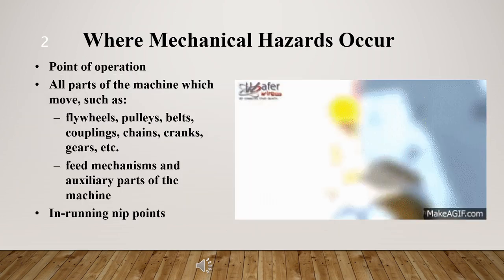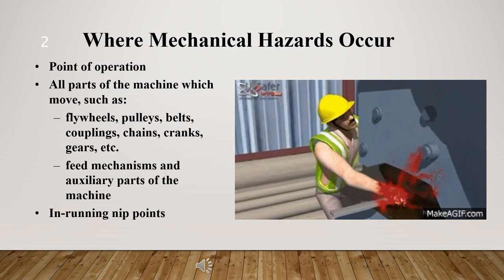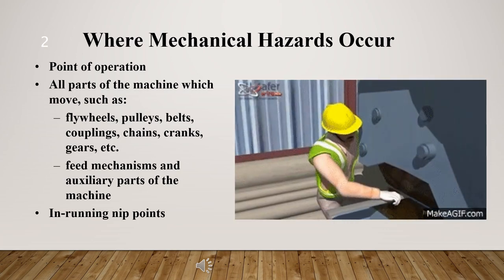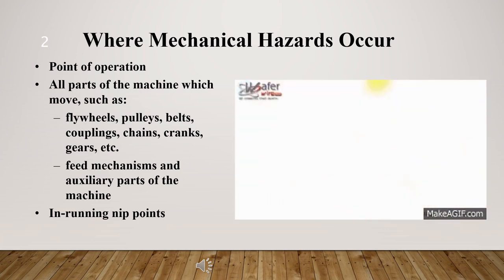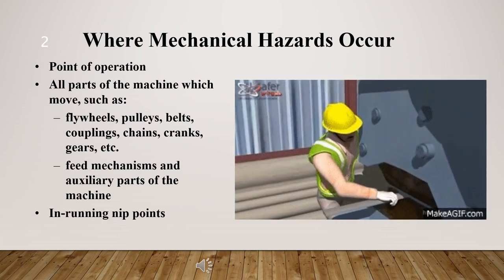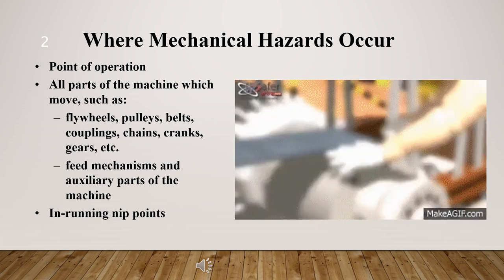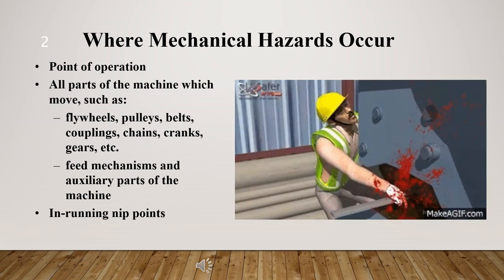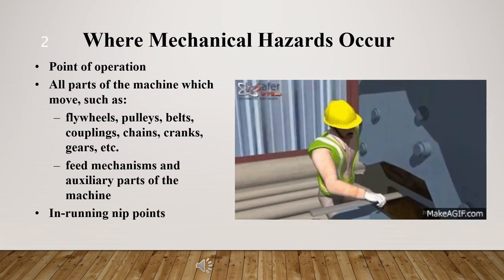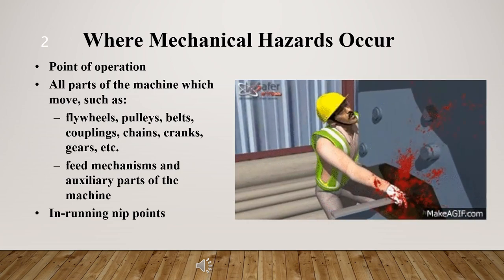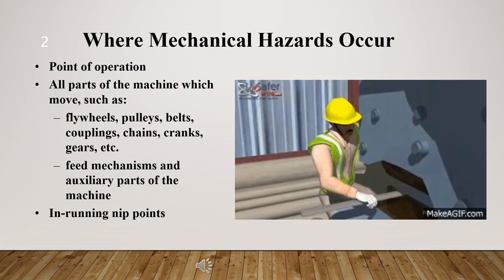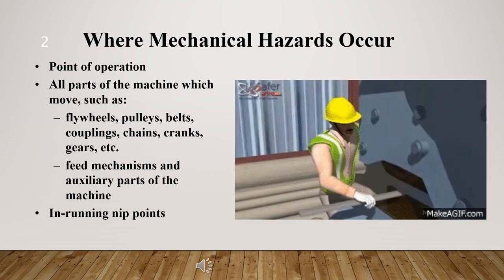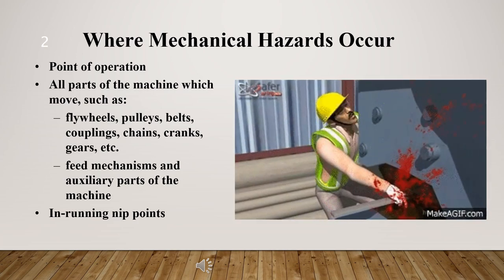In this part, we will learn where mechanical hazards occur. Mechanical hazards occur in the following areas: point of operation; all parts of the machine which move, such as flywheels, pulleys, belts, couplings, chains, cranks, gears, etc.; feed mechanisms and auxiliary parts of the machine; and in-running nip points. We will discuss each hazard in detail in the next parts.